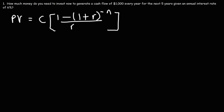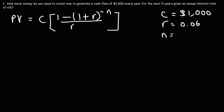Let's begin by writing down what we know. The cash flow is the amount of money we're receiving each time period — in this case every year — so the cash flow is $1,000. R is the annual interest rate of 6%, which as a decimal is 0.06. The number of time periods N is 5, since we're credited with interest five times.